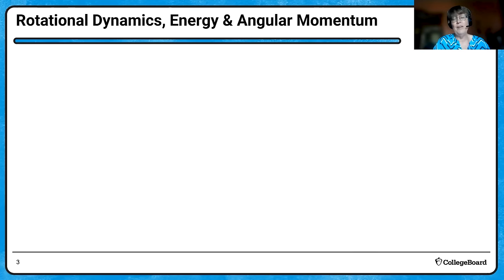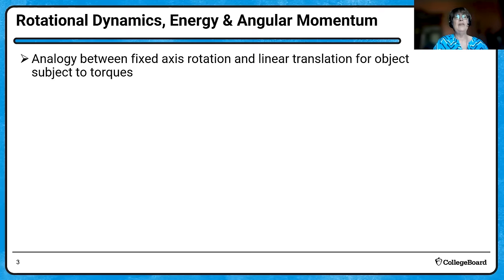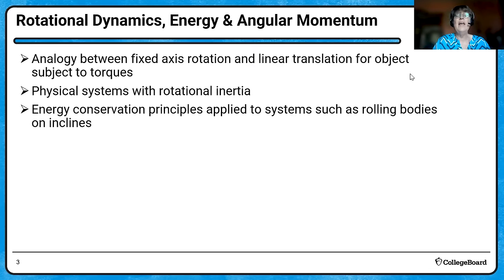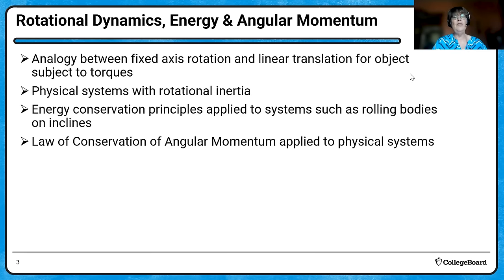One of several of my favorite topics. We're definitely going to continue looking at the analogy between fixed axis rotation and linear translation for objects subject to torques. We're going to look at physical systems that have rotational inertia, and we're going to apply the conservation of energy principles to systems such as rolling bodies on inclines. We'll also look at the law of conservation of angular momentum.